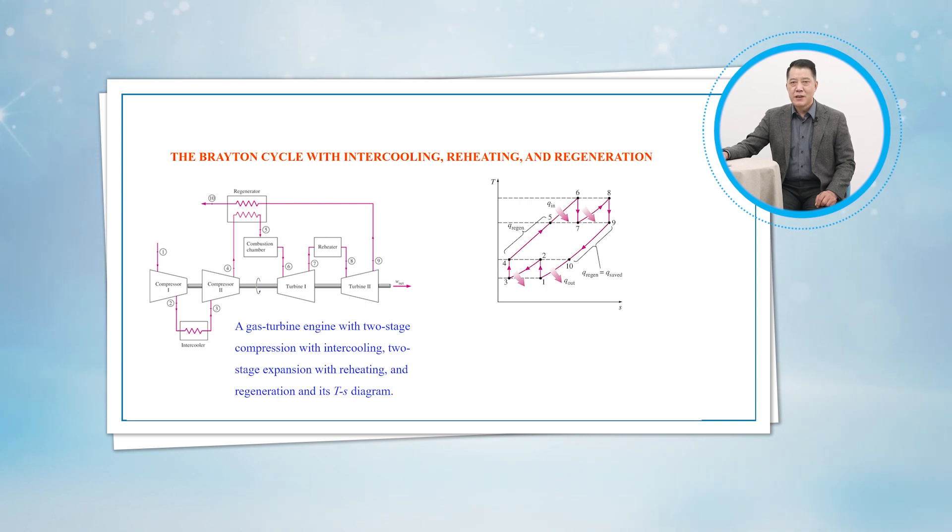The gas enters the regenerator where it is heated to T5. In an ideal regenerator, the gas leaves the regenerator at the temperature of the turbine exhaust, i.e., T5 equals T9. The primary heat addition process takes place between states 5 and 6.